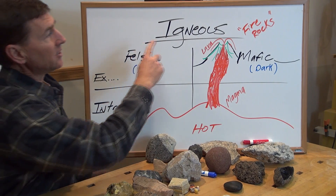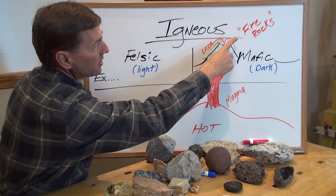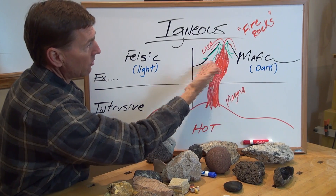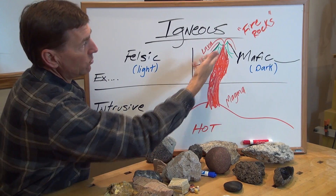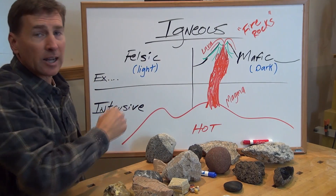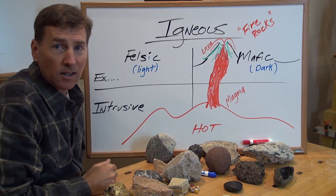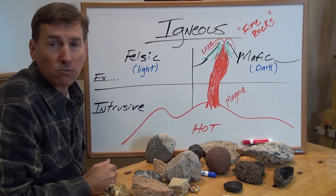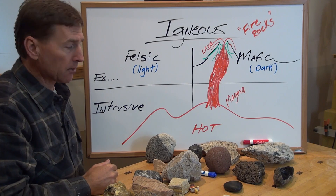The igneous rocks — I call them fire rocks. That's because magma from deep down, or lava from the surface which creates a volcano, creates all kinds of rocks made from molten lava or magma.